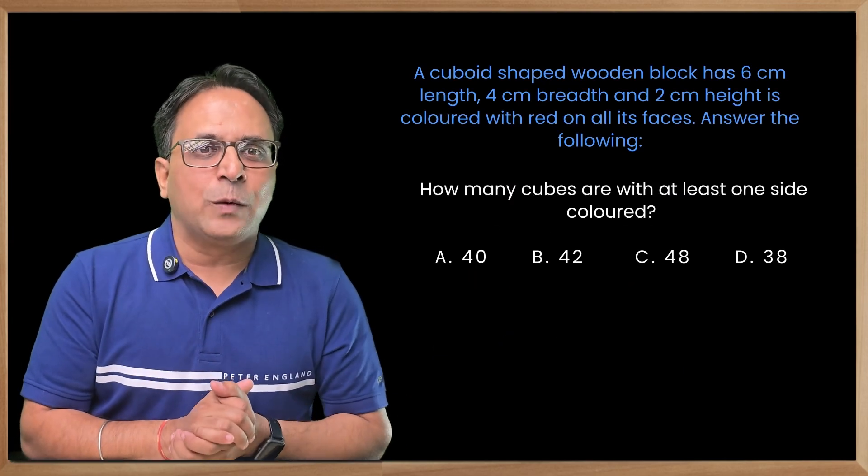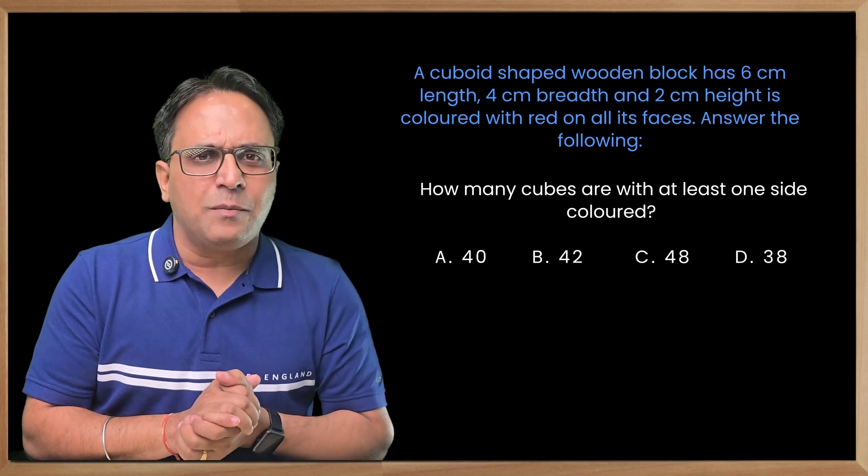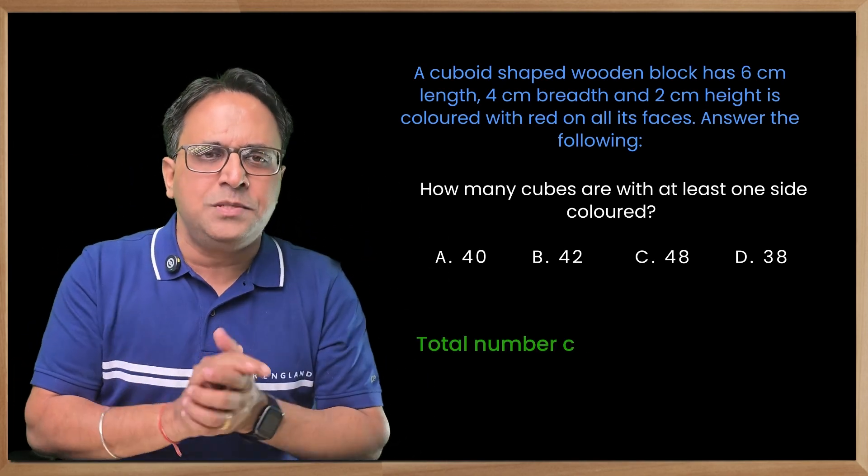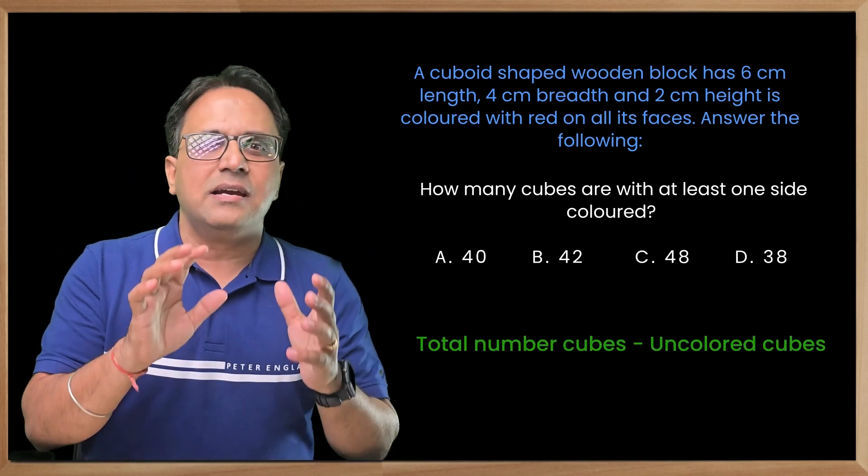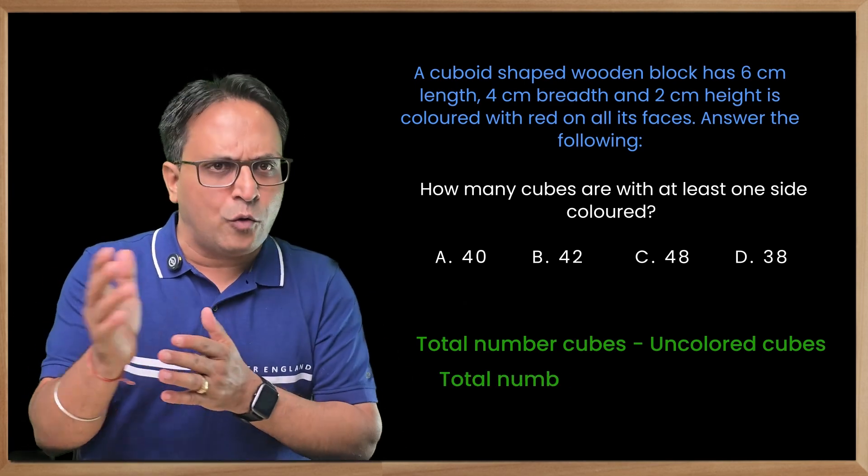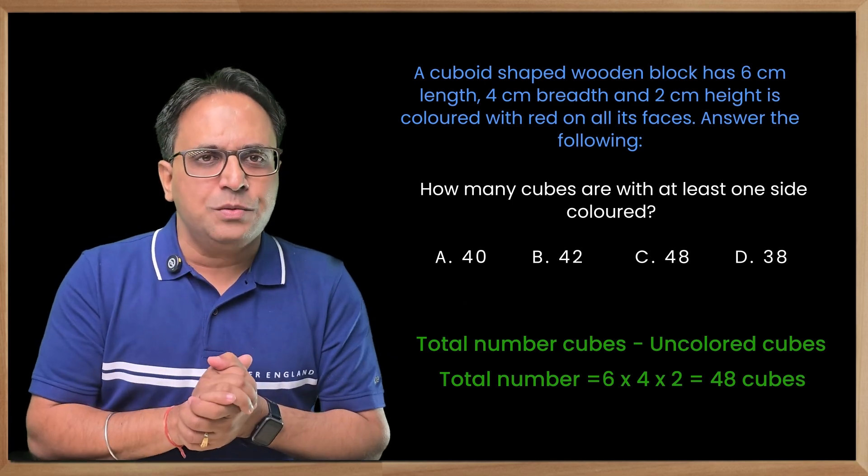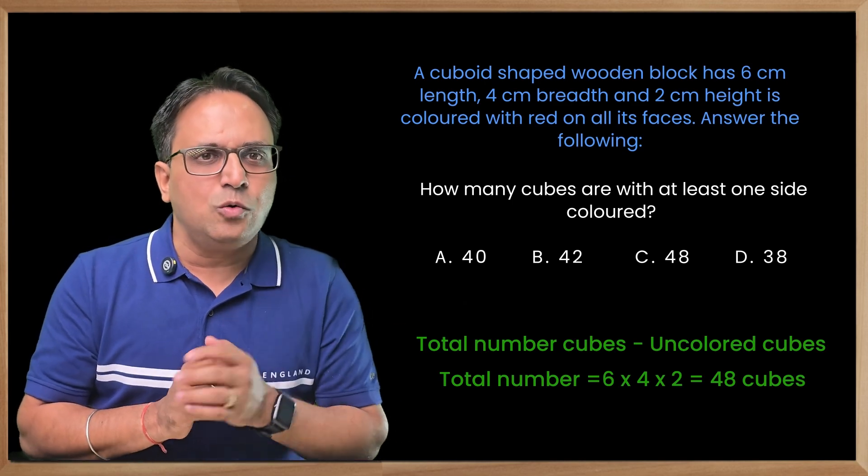Next: How many cubes are with at least one side colored? This question can be better solved by subtracting the total number of cubes minus the uncolored cubes. In this case, total cubes equals 6 × 4 × 2, that is 48. Total number of uncolored cubes equals (6-2) × (4-2) × (2-2), that is 4 × 2 × 0.